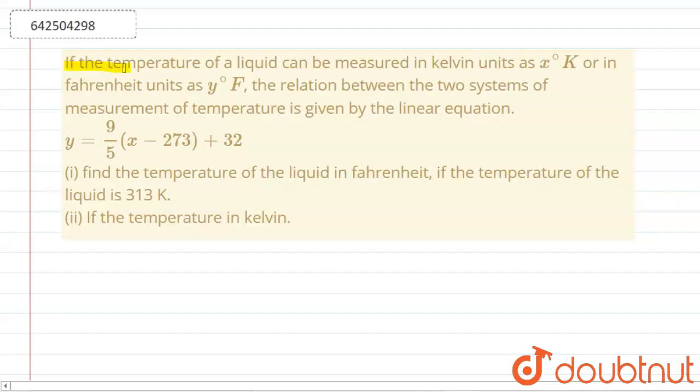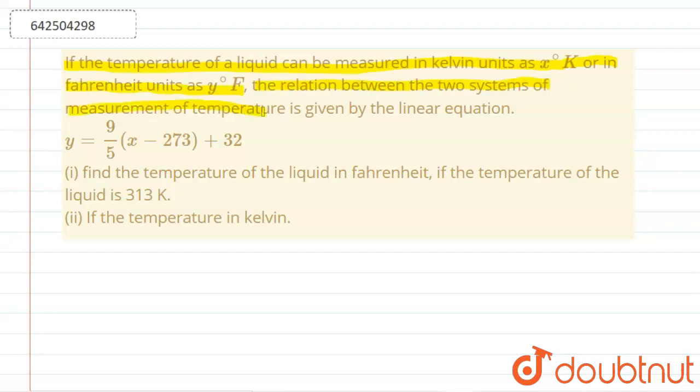The problem says if the temperature of a liquid can be measured in Kelvin units as x degree Kelvin or in Fahrenheit units as y degree Fahrenheit, the relation between the two systems of measurement of temperature is given by the linear equation. So this is the equation that we are given in order to find out the relation between the two units of temperature measurement.